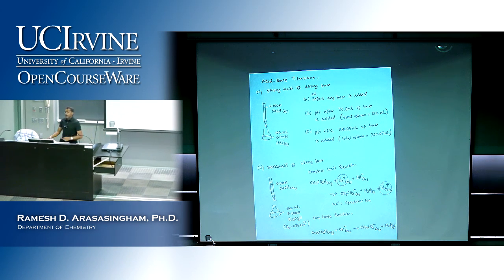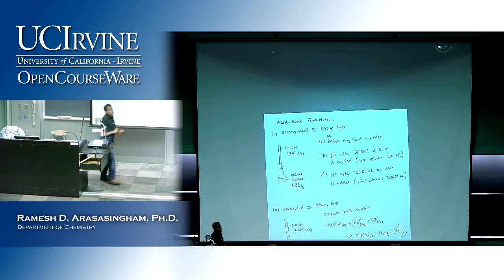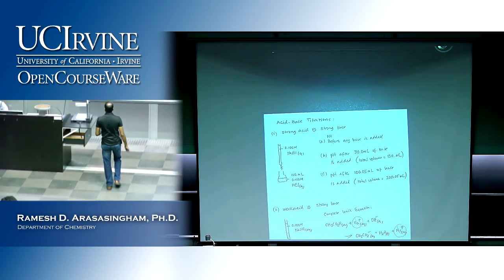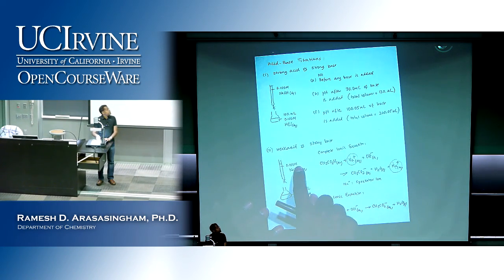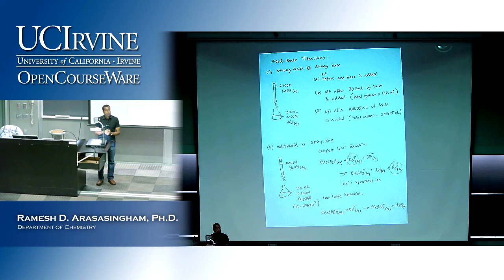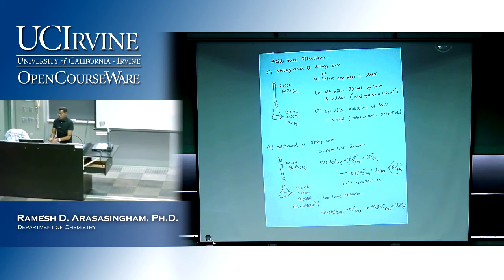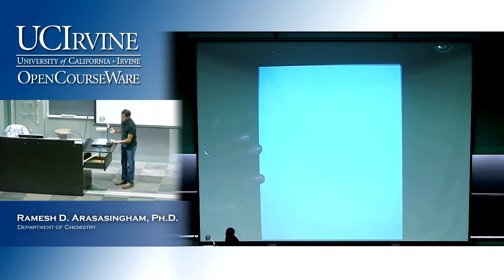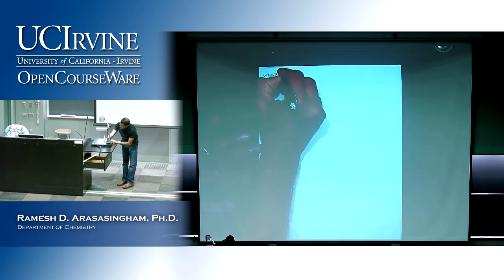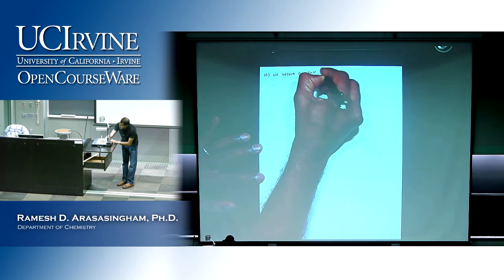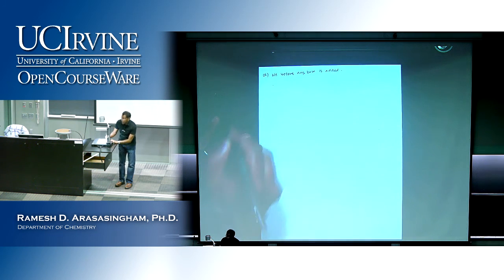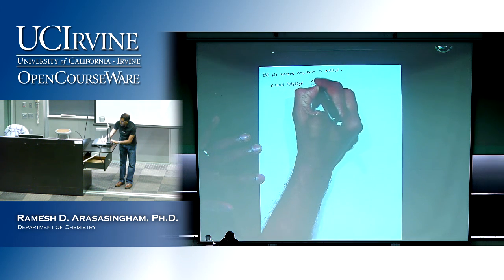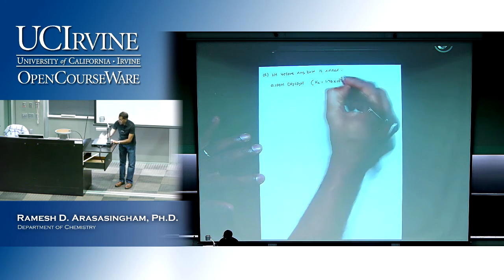Now we're going to do these same calculations with weak acid/strong base. We have 0.1 molar sodium hydroxide in the burette and 100 mL of 0.1 molar acetic acid in the flask. The first scenario is to calculate the pH before any base is added. Before any base is added, all we have is 0.1 molar acetic acid with Ka = 1.76 × 10⁻⁵.